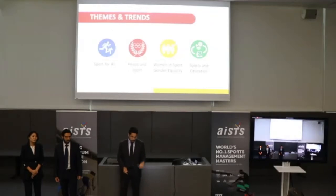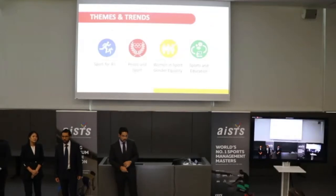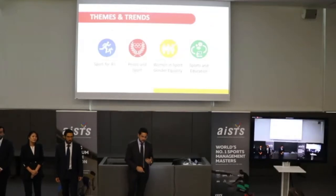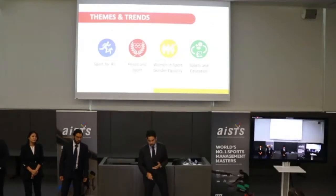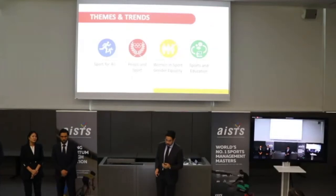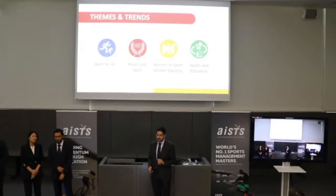Going through our methodology, we examined the database and classified it into four themes chosen with the IOC. For each theme and the legacies within them, we tried to find categories that would enable our cross-case analysis, unlocking insights into trends we noticed throughout all 47 Olympic Games. The four chosen themes were: sports for all, peace in sport, women in sport and gender equality, and sports in education.